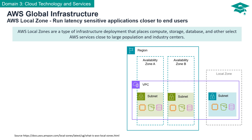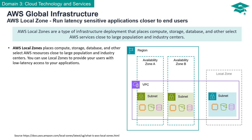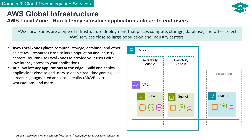AWS Local Zones allow you to run latency-sensitive applications closer to end-users. They place compute, storage, database, and other select AWS services close to large population and industry centers, providing users with low-latency access to your applications. Local Zones enable you to create applications in proximity to your users, eliminating lags in real-time gaming, live streaming, augmented and virtual reality experiences, virtual workstations, and beyond. It's the secret sauce for responsiveness.